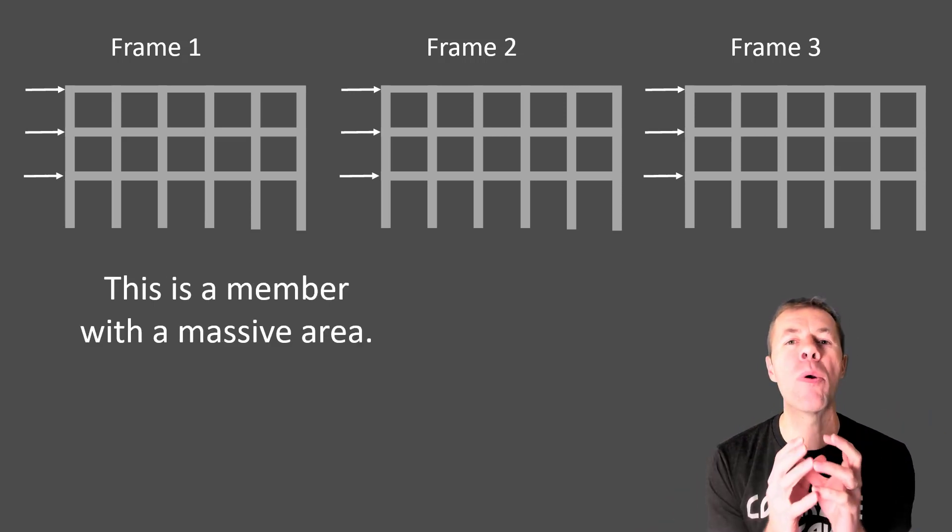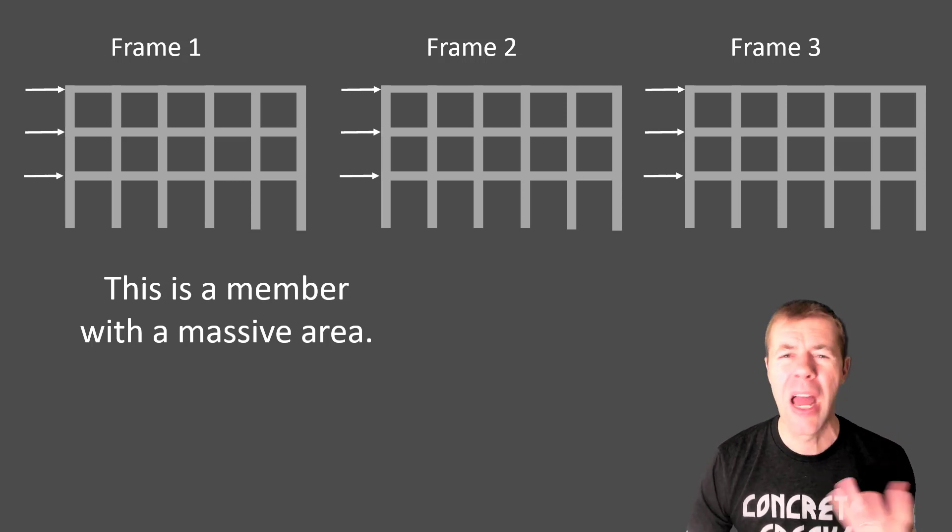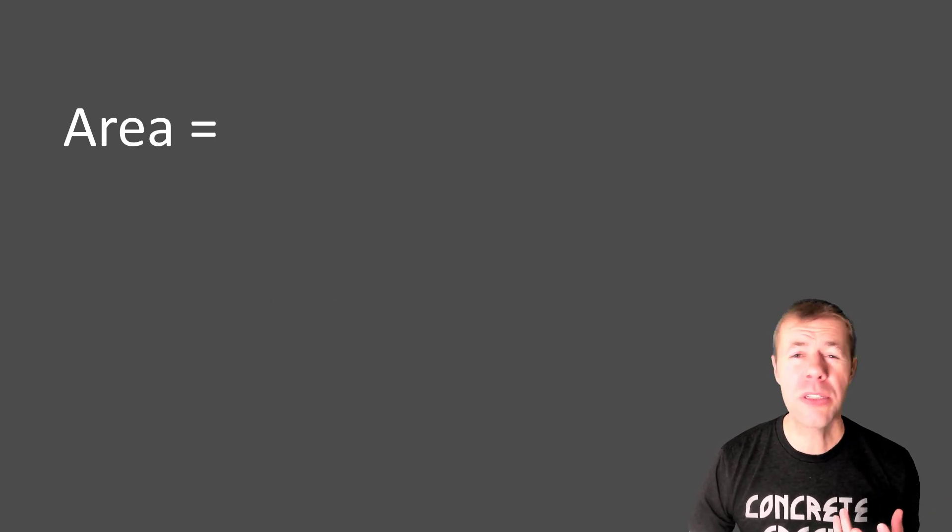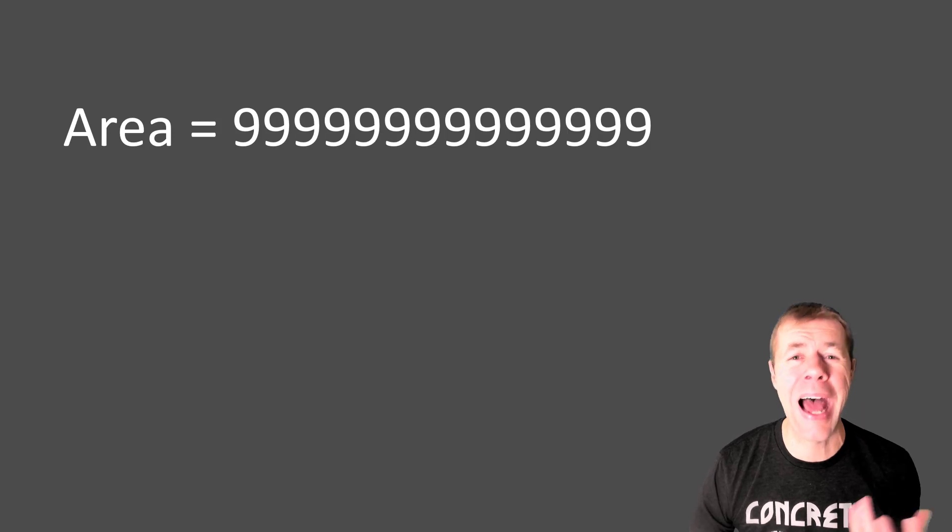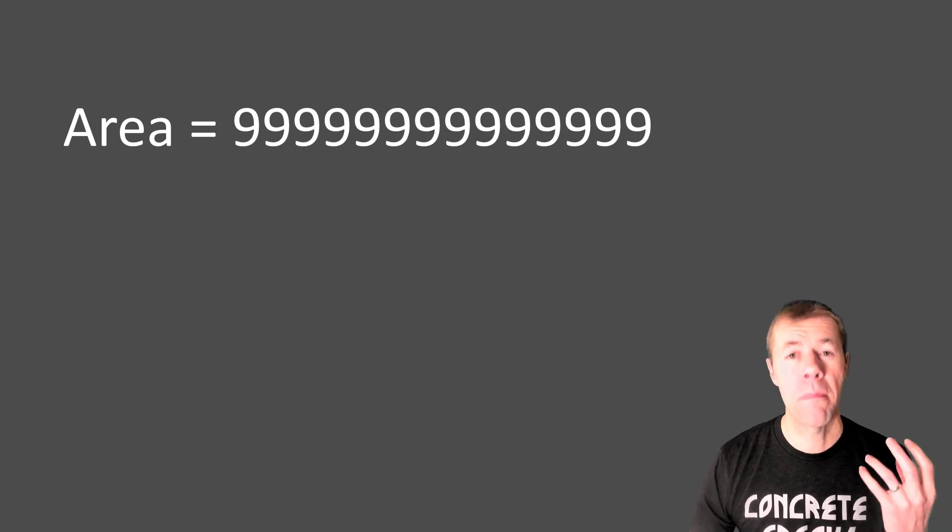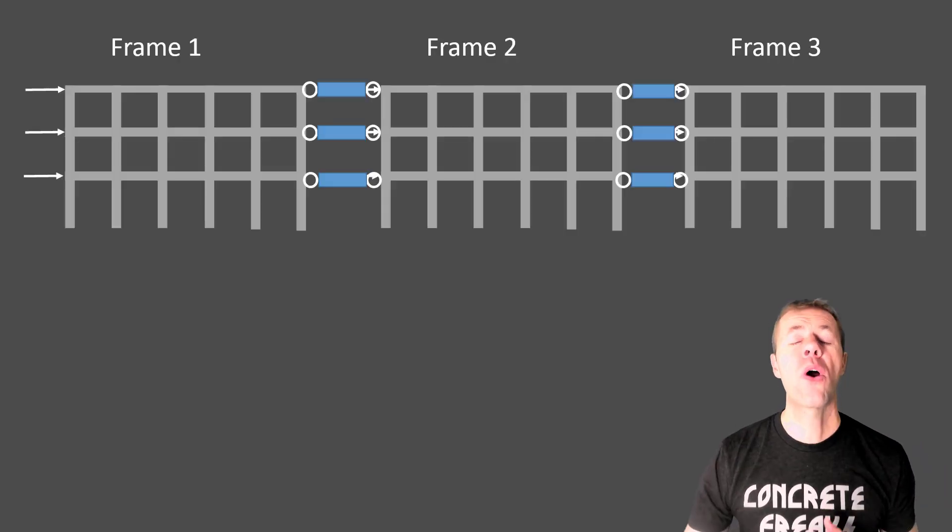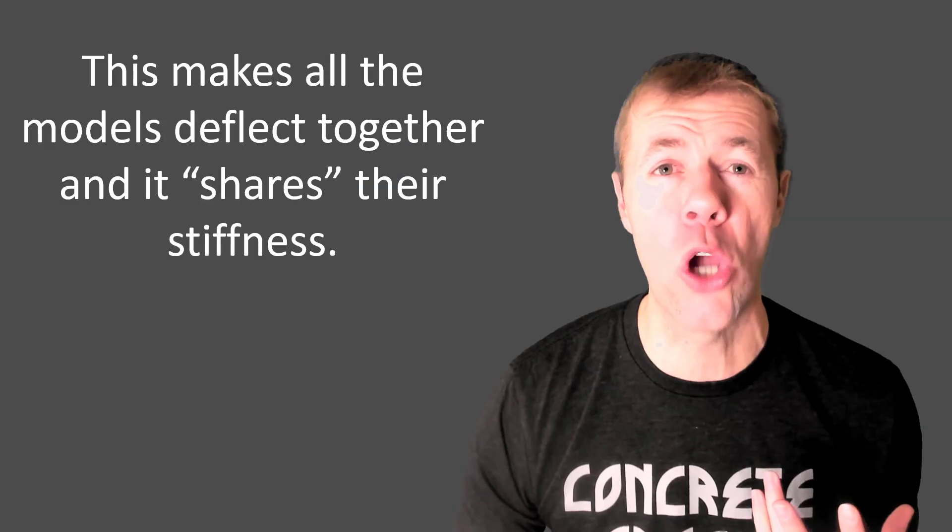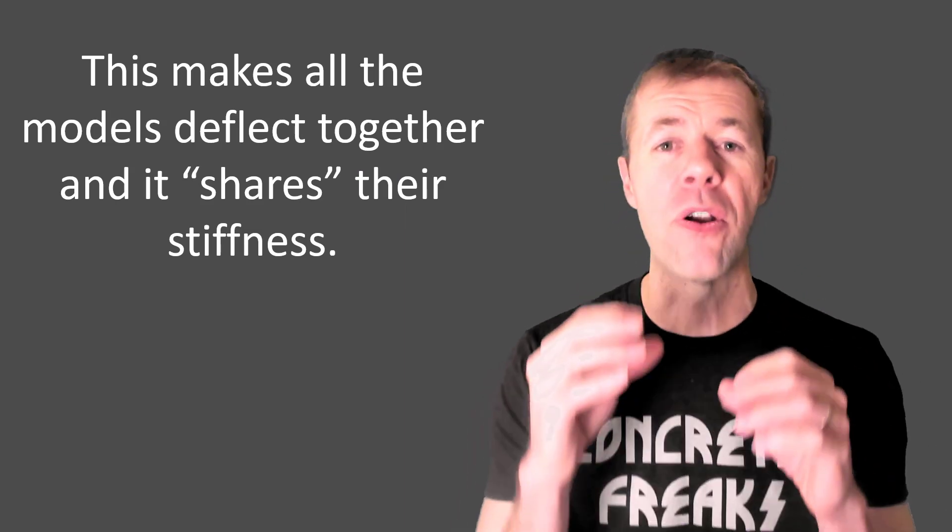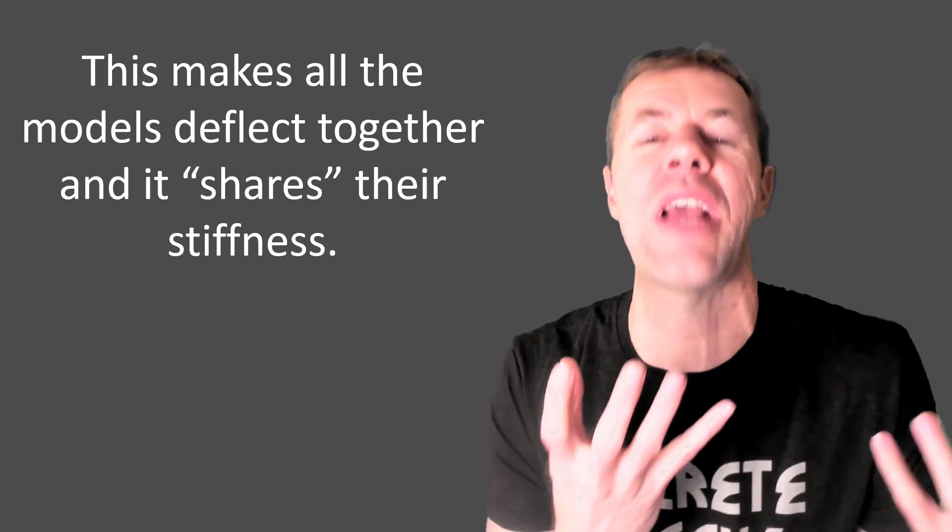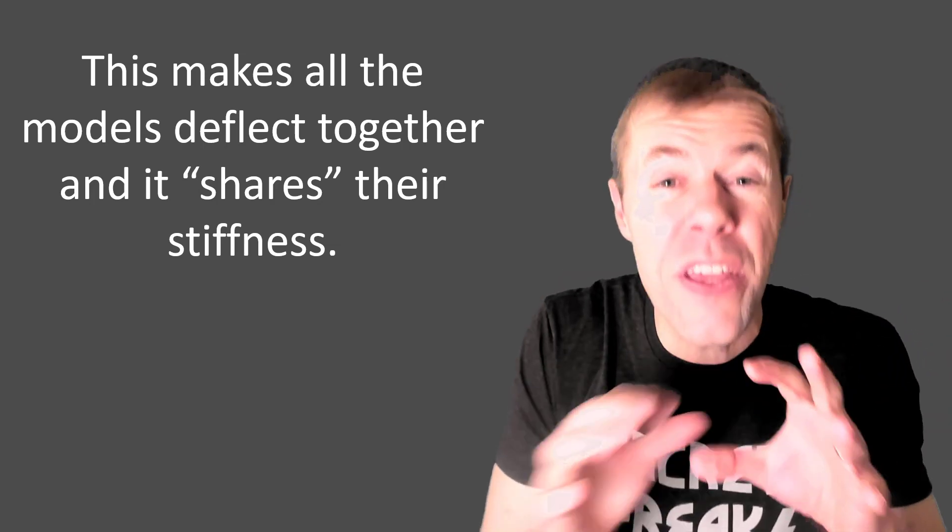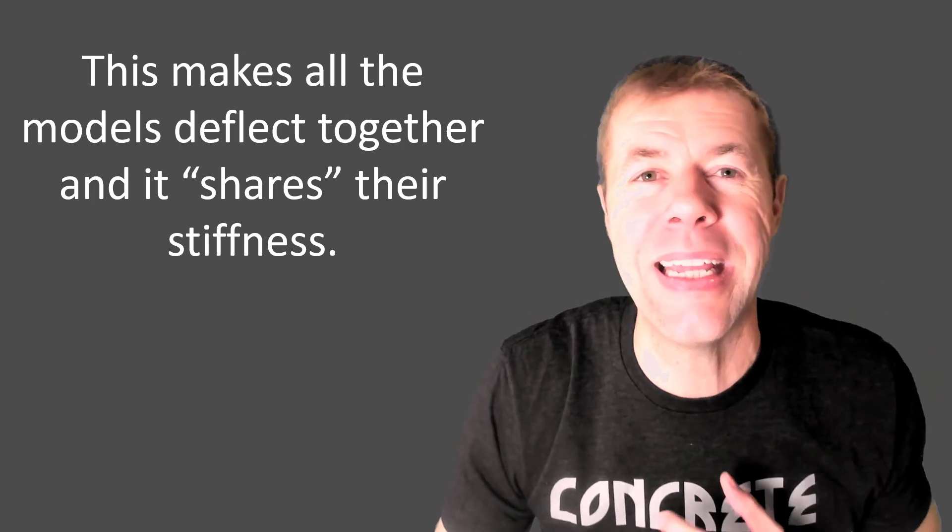What's a rigid link? It is a member with a massive area inside the computer program. How do you do this? Well, you go inside the computer program, you draw your member, you give it an area, and you just keep typing nines, nines, nines, nines. You fill it up with nines. That's a massively big area, right? These are our rigid links. These little blue things here, you hook them together with pins to make sure they don't give you any moment capacity. And you put the loads on and they go. This makes the models all work together. This makes them share their stiffnesses and their loads with one another. If one starts deflecting too much, it gives its load to another. This is beautiful, simple, elegant, and easy.